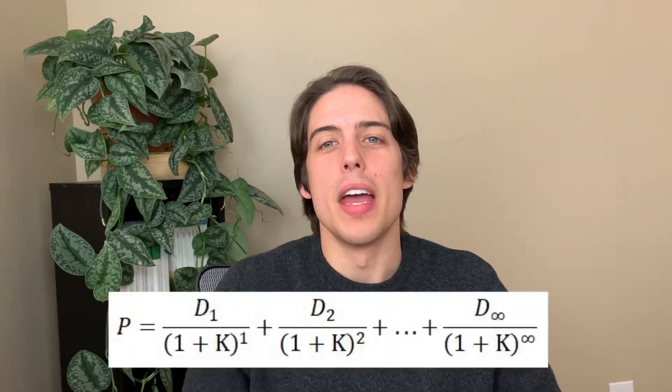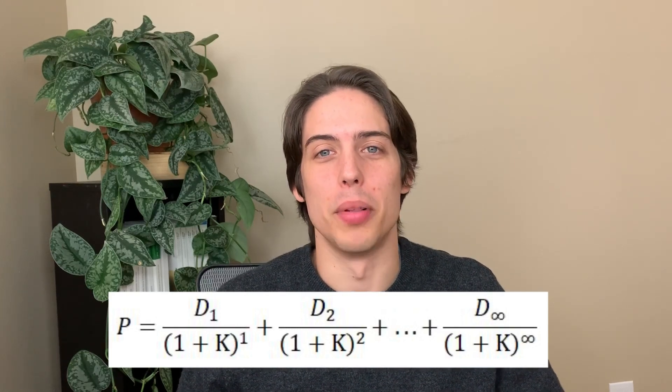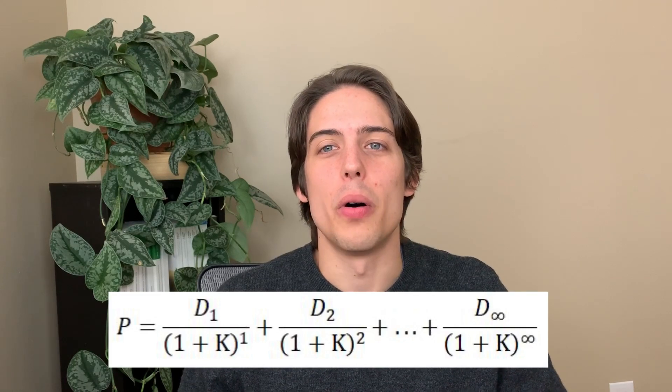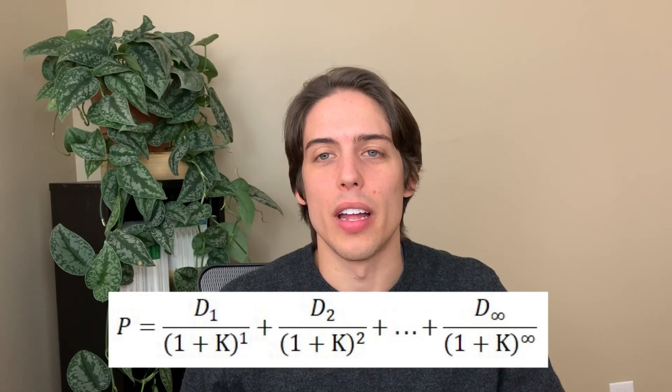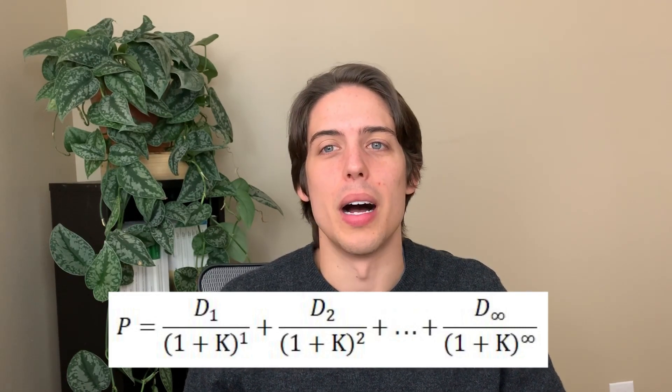This formula is a special case of the dividend discount model. It assumes constant growth, and to see this at work let's look at the expanded discount model. If you're seeing this formula for the first time it might look complex, but it's really a simple process. You can always use my calculator, which I'll link to in the description below, or once the knowledge sinks in, you can always recreate your own and make modifications.